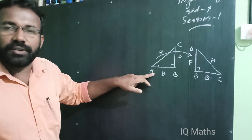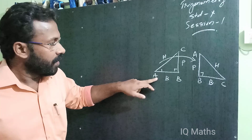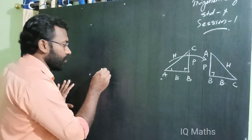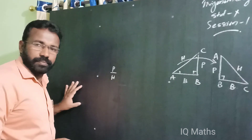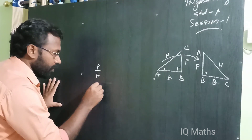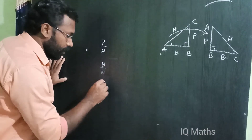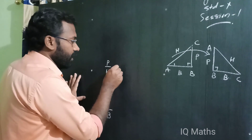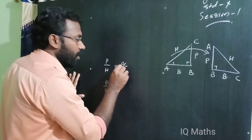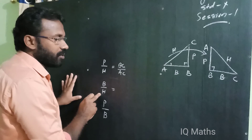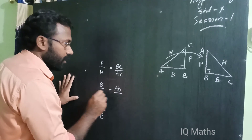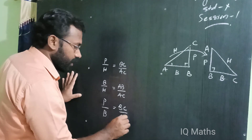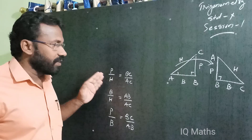Trigonometry is the study of ratios of sides. We will now discuss the ratios of sides in this triangle. The first ratio is perpendicular by hypotenuse, which is BC by AC. The second ratio is base by hypotenuse, which is AB by AC. The third ratio is perpendicular by base, which is BC by AB.